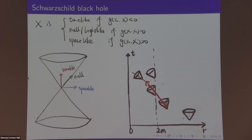Going back to the Schwarzschild setting: when r is large, the light cone looks like that in Minkowski spacetime. As we get closer to the event horizon at r equals 2m, the light cone tilts more and more, such that when you cross the event horizon, the trajectory of a timelike curve cannot go back to the exterior region — it has to go to the real singularity. This is why we call this region the black hole region: it cannot communicate with the exterior, and light cannot escape from it.